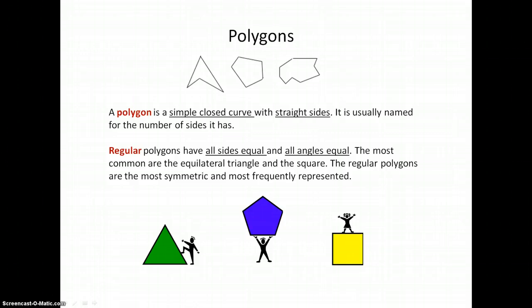The regular polygons are the most symmetric of the geometric shapes and they're most frequently represented. If you were to go to the store and buy blocks in geometric shapes, they would pretty much be regular polygons. It's very difficult to purchase or to even find clip art of polygons that aren't regular. The regular ones are just more pleasing to the human eye.